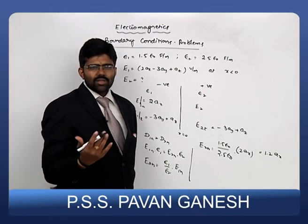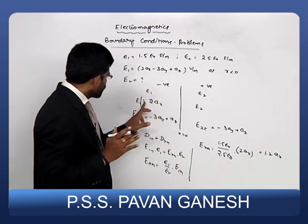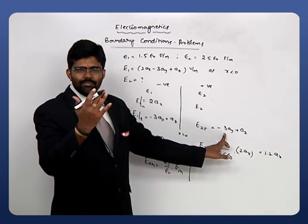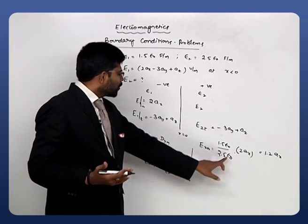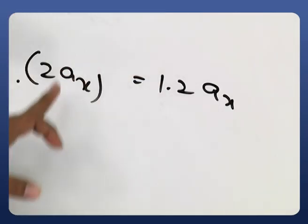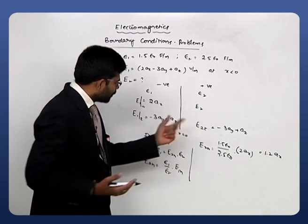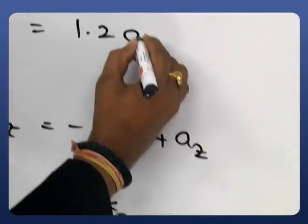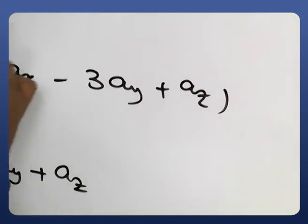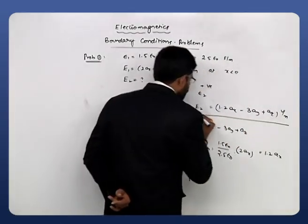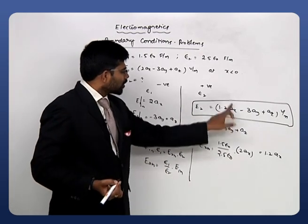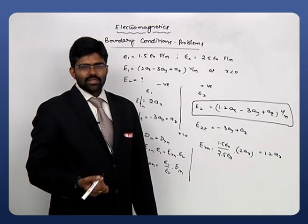The electric field was decomposed into a normal component and a tangential component. The tangential component as-is was transferred to the second medium through the boundary, but the normal component changed — initially 2ax, now the magnitude changed to 1.2ax. The combination of these two gives E₂ = 1.2ax - 3ay + az volt per meter. This is the electric field component in the second medium.